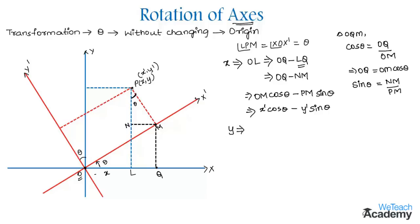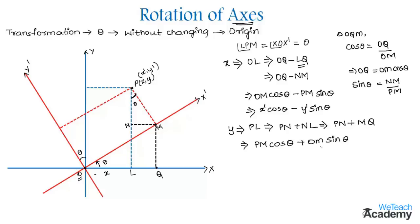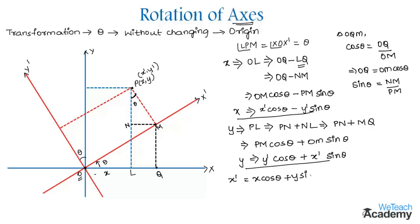Similarly, we find y, which equals length PL with reference to the old system. PL equals PN plus NL, which equals PN plus MQ. Using the same concept, y equals PM cos theta plus OM sin theta, which gives y equals y-dash cos theta plus x-dash sin theta. From these equations, x-dash equals x cos theta plus y sin theta, and y-dash equals minus x sin theta plus y cos theta.